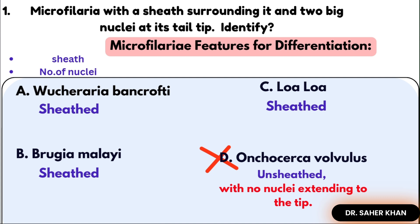Wuchereria bancrofti, which is the most common one, has a sheath but no nuclei at the tail. Remember that.